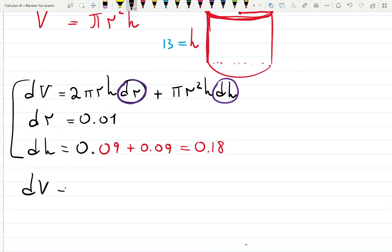dV can be approximated as 2π times r, which is 3, times h, which is 13, times dr, which is 0.01, plus...